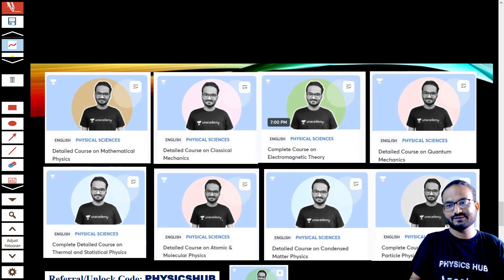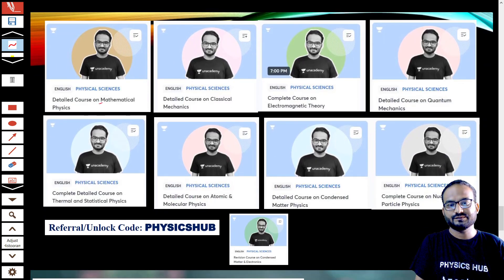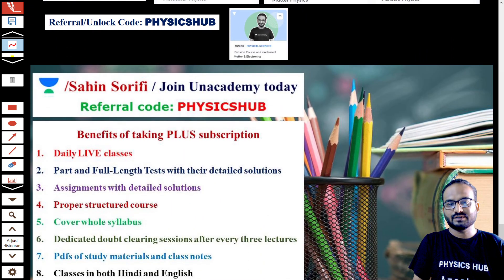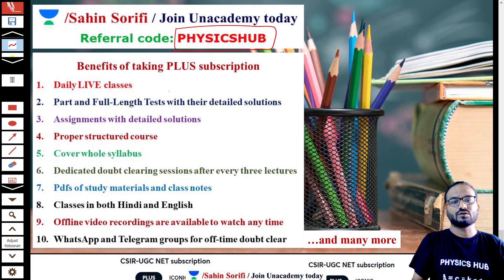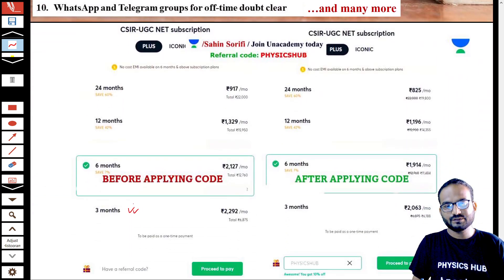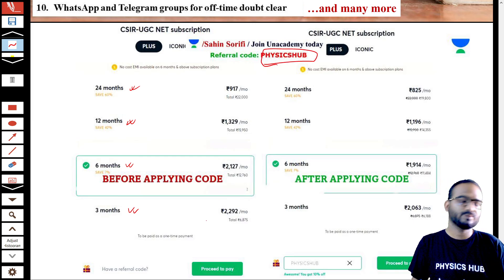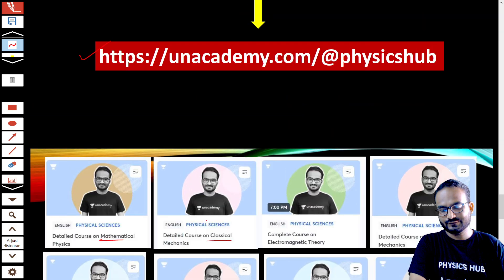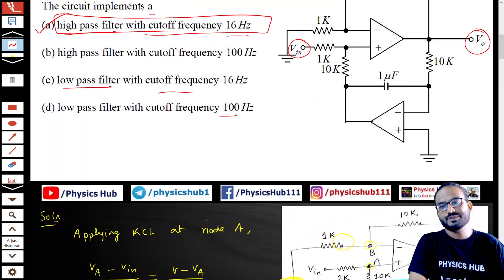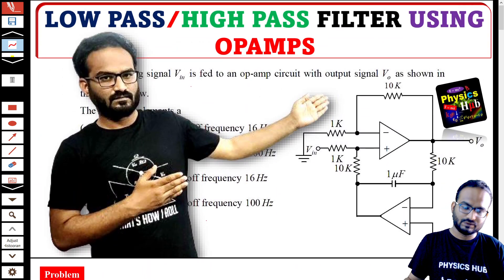You can have a look at my courses by visiting this URL: unacademy.com/@physicshub. You will get all the detailed courses like mathematical physics, classical, quantum, electromagnetic, and many more. You can join Unacademy classes using our referral code PHYSICSHUB. You get a lot of benefits after joining Unacademy Plus subscription. This is the current subscription plan going on: you can go for three months, six months, twelve months, or twenty-four month subscription. You can utilize our referral code PHYSICSHUB for getting maximum benefits. This is all for this video guys. Thank you very much for watching this video. If you are new to this channel, please subscribe to the channel and don't forget to press the bell icon. Finally, thanks for watching.